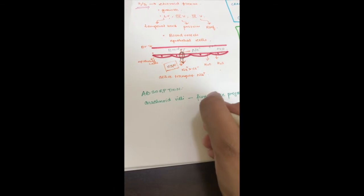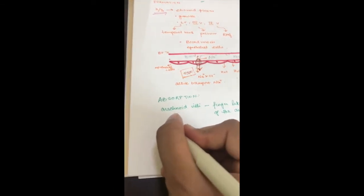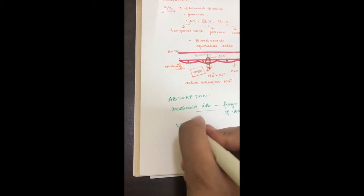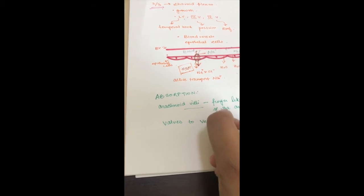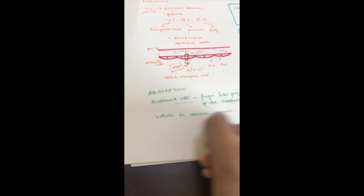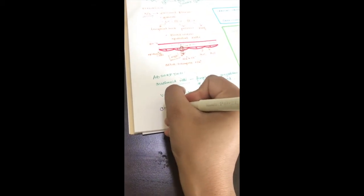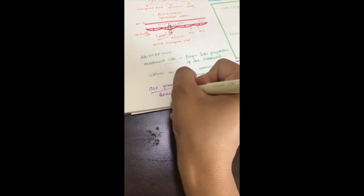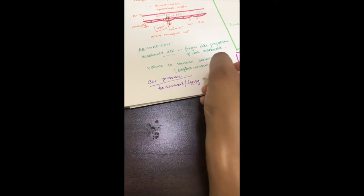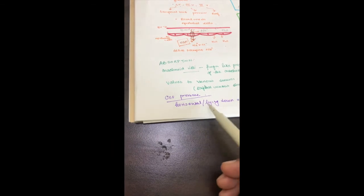These valve-like projections allow CSF to flow into the venous sinuses. Now let's talk about CSF pressure. In a normal person in the horizontal or lying-down position, the CSF pressure is 130 mm of water.